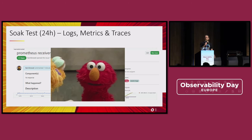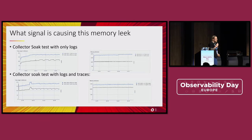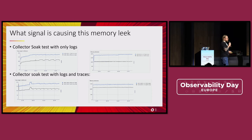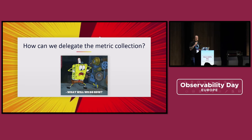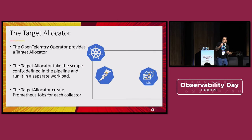I then investigated what was causing this — was it metrics, tracing, or logs? I did a soak test with only logs, then a soak test with only tracing and logs — the Collector resource usage was super stable. It's from the moment I introduce the Prometheus receiver that the memory started jumping to the roof, along with CPU utilization. So how can I delegate the metric collection?